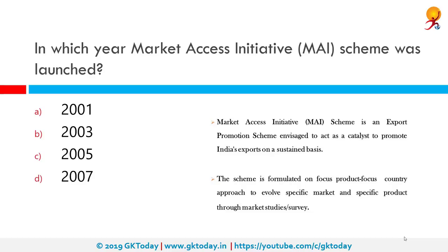In which year was the Market Access Initiative Scheme launched? It was first launched in 2003 and recently revamped in 2018. In 2018 the Market Access Initiative Scheme was developed for the purpose of promoting exports and addressing interventions on a sustained basis, to explore new markets across the globe and promote export-oriented activities.